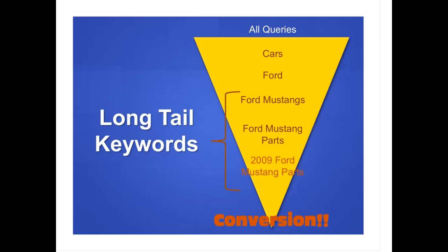Let's say you're searching for a new car, so you type in 'car' — that's such a broad term. After a little while of surfing the net, you decide you want to buy a Ford. So you type in 'Ford,' do a little more research, and decide you're going to purchase a Ford Mustang. Then you think they're a tad bit expensive, maybe you can refurbish your old Ford Mustang. So you type in 'Ford Mustang parts.' And once you know exactly what you're going to do, you type in '2009 Ford Mustang parts' — because you're at the point in your sales funnel where you know exactly what you want to buy.